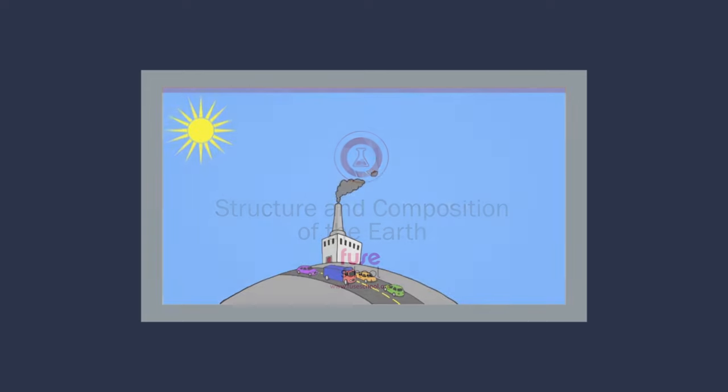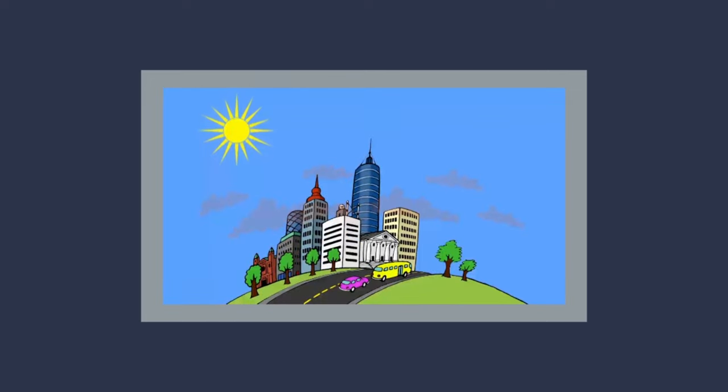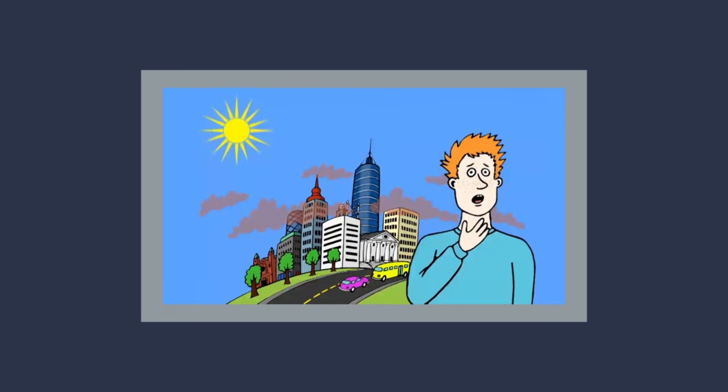Ozone is also present in the troposphere, formed mainly by the action of sunlight on pollution from motor vehicles. Here it helps to form photochemical smog and is a pollutant.